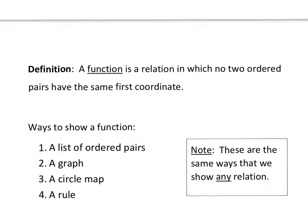We have four ways that we show a function: a list of ordered pairs, a graph, a circle map, and a rule. These are the same ways that we show any relation, but we use them specifically for functions as well.